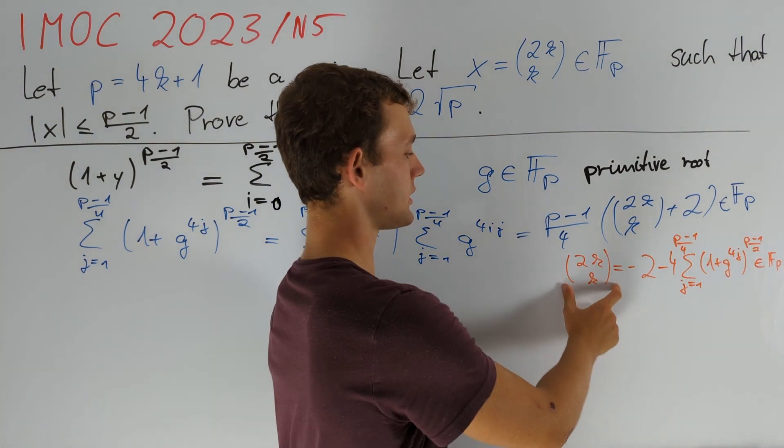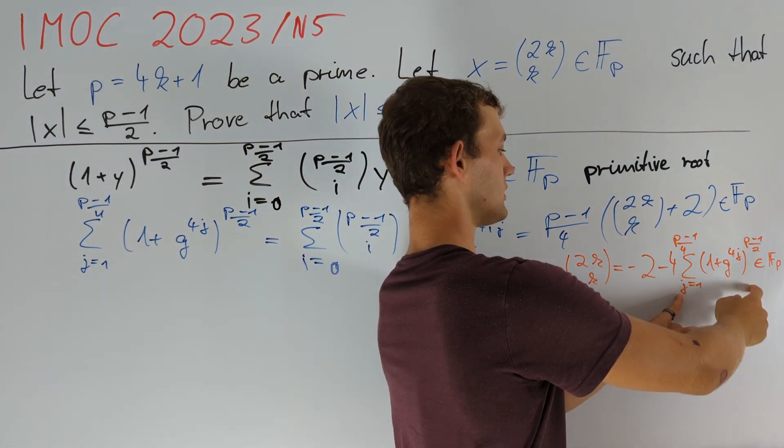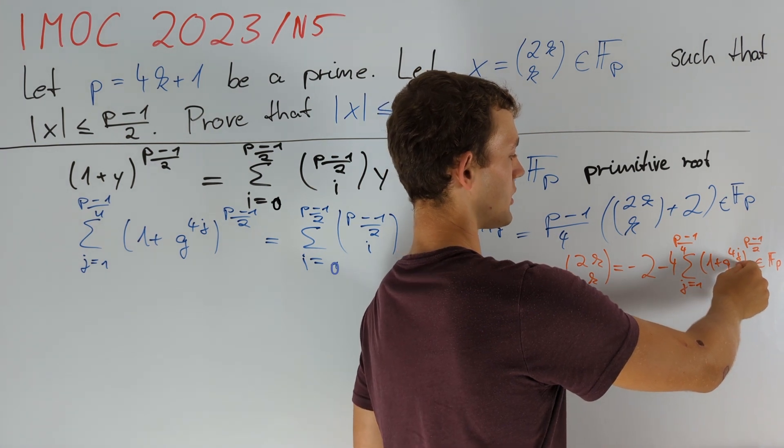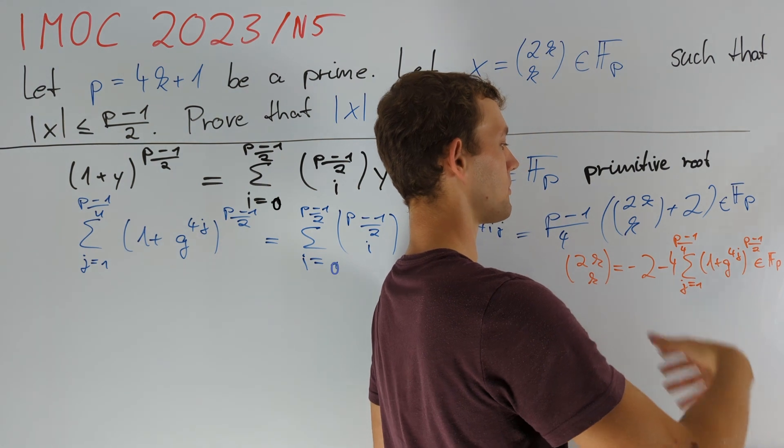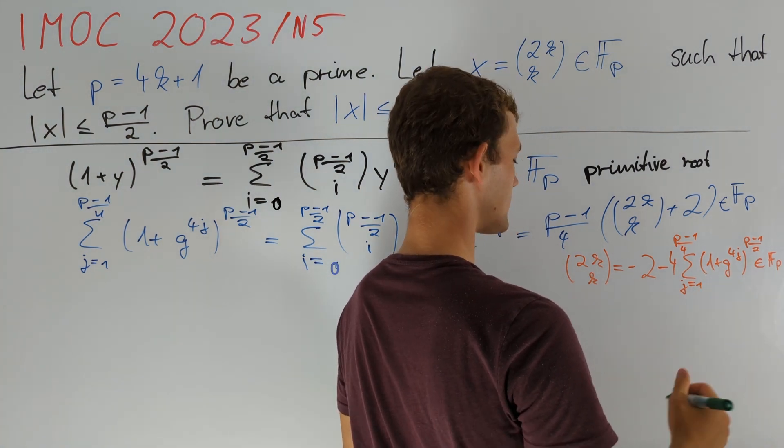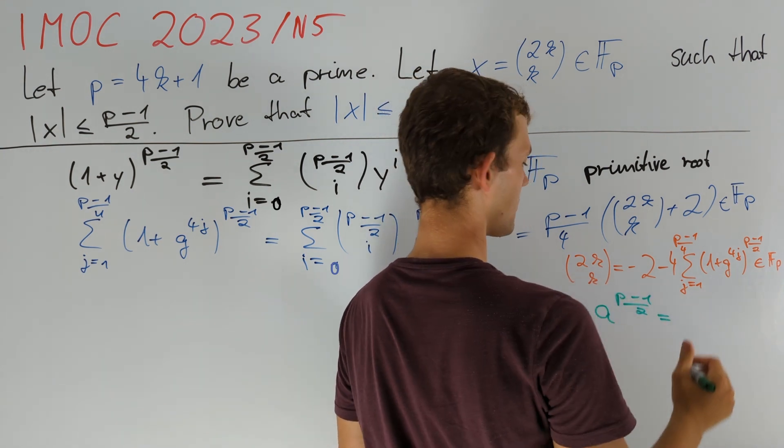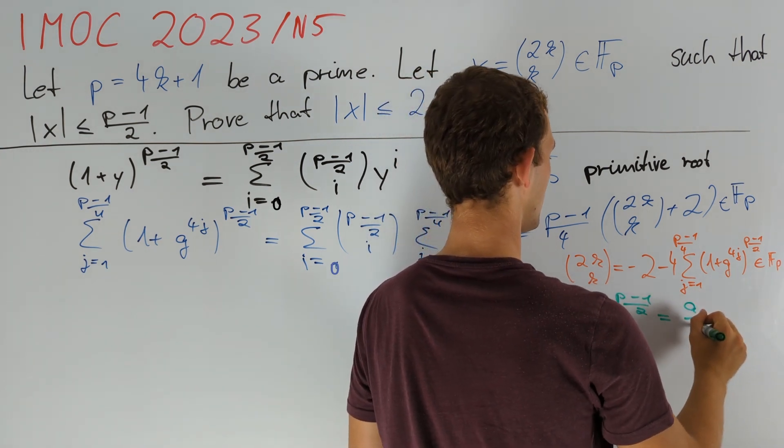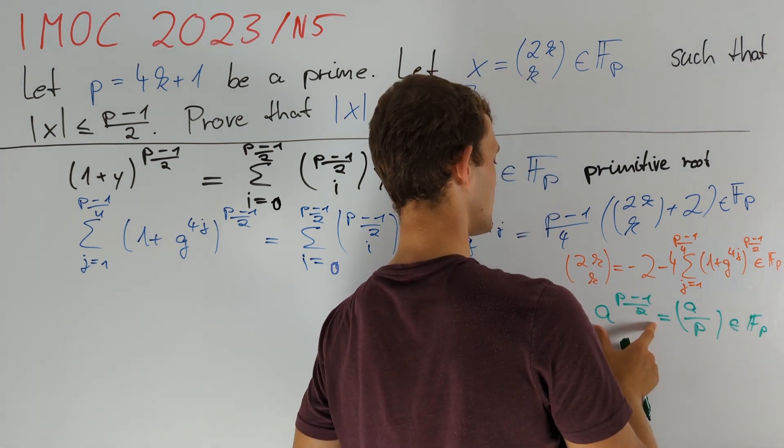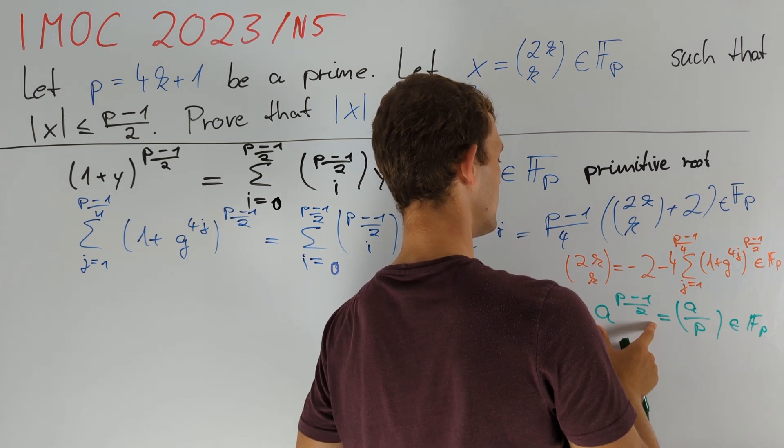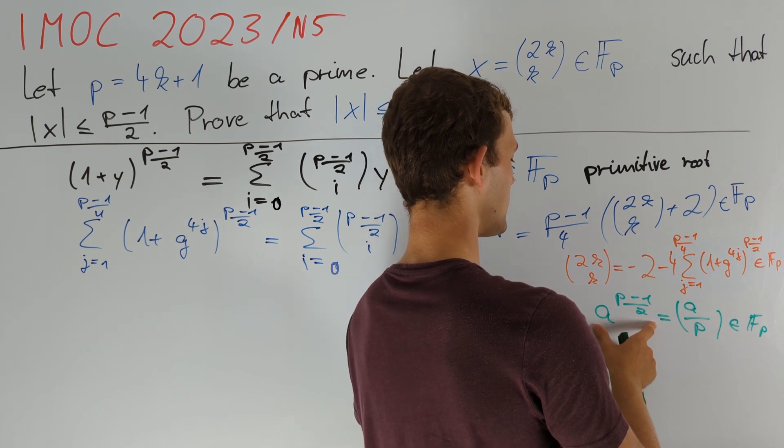We found a first representation for 2k choose k and now want to interpret this sum. Notice that 1 + g^(4j) goes through all the values of quartic residues plus 1 modulo p. Moreover Euler's criterion tells us that a^((p-1)/2) is congruent to the Legendre symbol (a/p) in Fp. So this equals 1 if and only if a is a non-zero quadratic residue modulo p, 0 if a equals 0 in Fp and -1 otherwise.